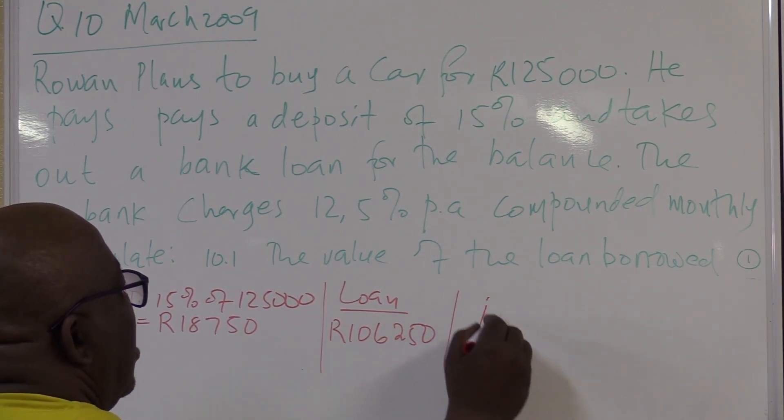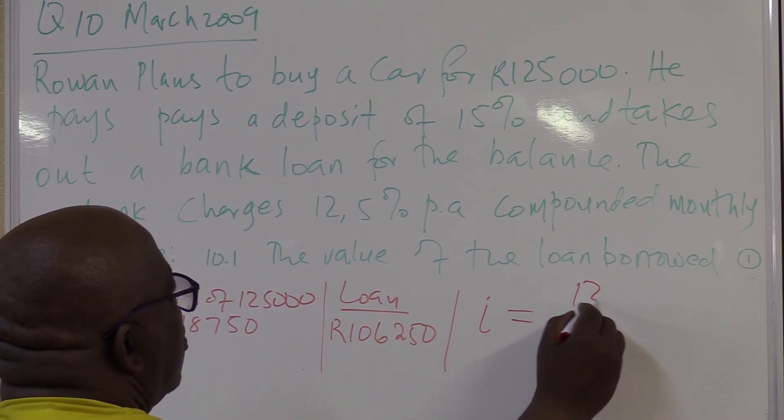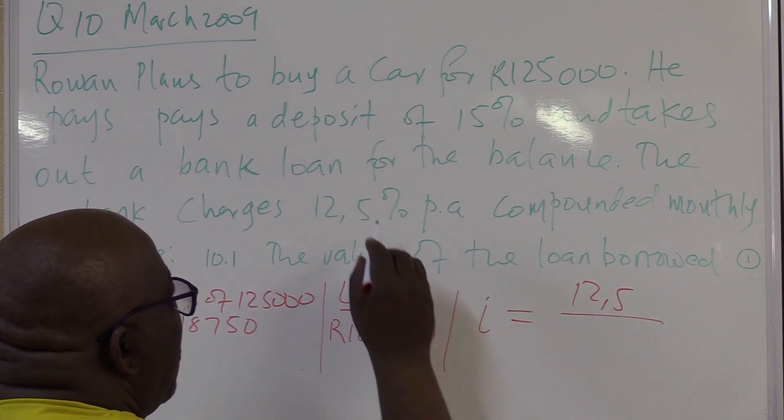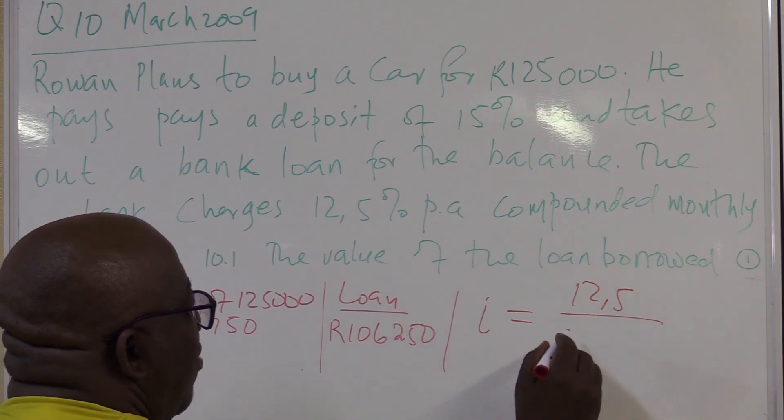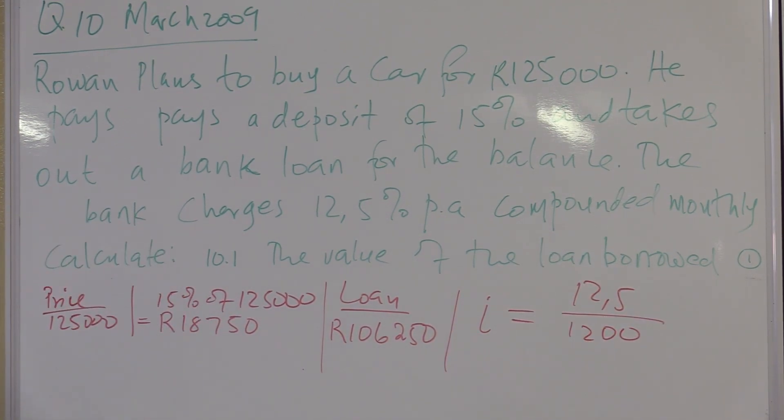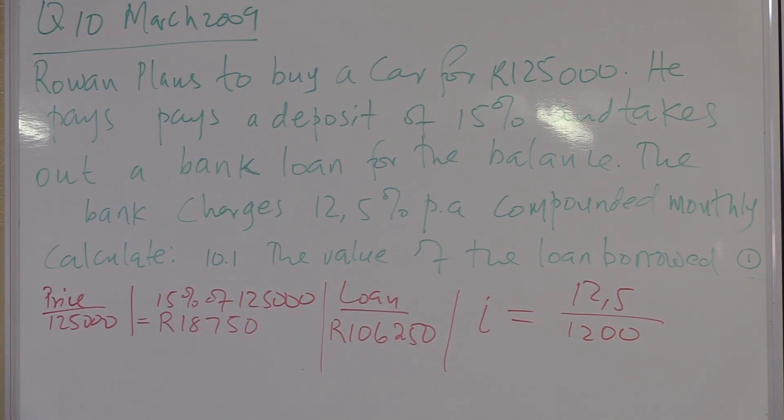So my I, in this case, will be equals to 12.5 over compounded monthly. This was going to be percent, which is 100, and there's this 12 here. So it's over 1,200. Compounded monthly. Calculate the value of the loan borrowed.